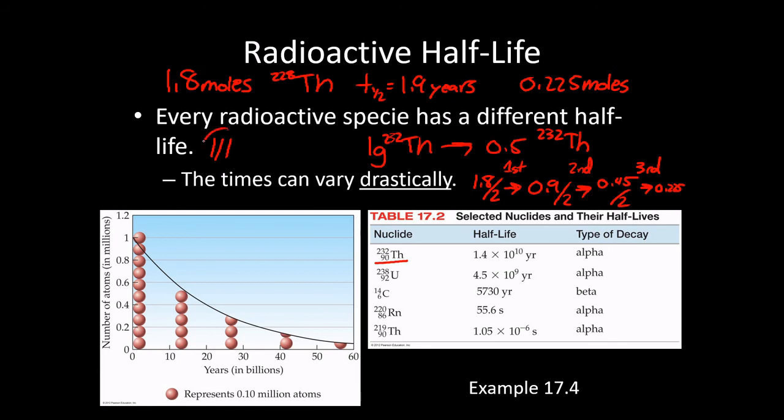So we had three half-lives that needed to occur for us to get from 1.8 down to 0.225. And so because three half-lives had to occur, the time that it took for us to do this is just three times the half-life. So three times 1.9 gives us 5.7 years. And that is our answer. So it took us 5.7 years for our sample of thorium-228 to decay down to 0.225 moles.